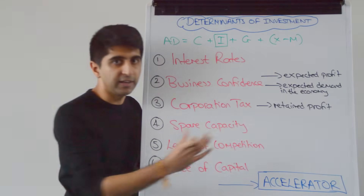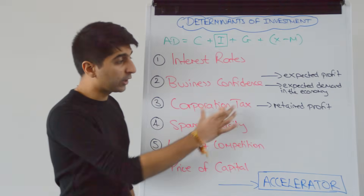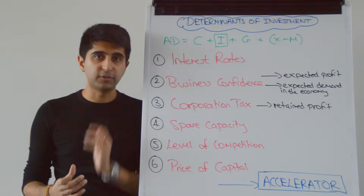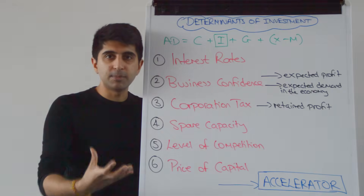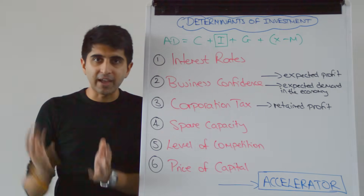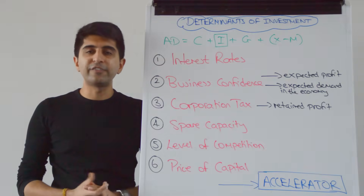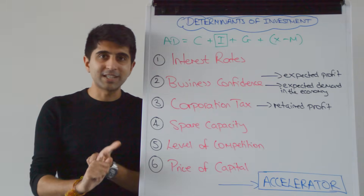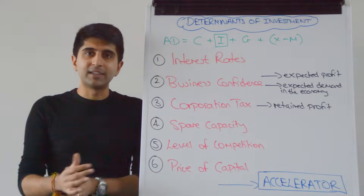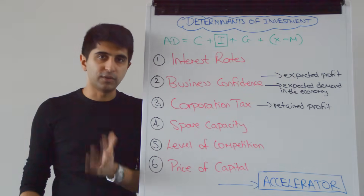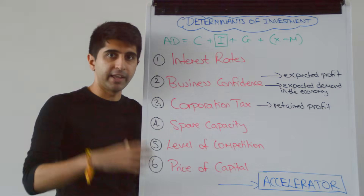Use the phrase retained profit here. Retained profit is the profit left after corporation tax has been paid, where corporation tax is a tax on business profits. The lower the corporation tax, the higher the level of retained profit, and the greater the potential for the business to invest. Remember, there are two main ways of financing investment: borrowing money or using retained profits. If corporation tax is low, retained profits are higher and businesses can use them to invest. If corporation taxes are high, retained profits are lower and investment will be lower.